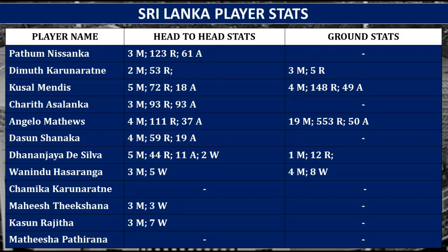Regarding Sri Lanka player stats — Pathum Nissanka averages around 61 against Afghanistan. Karunaratne has scored 53 runs in 2 matches. Kusal Mendis has an 18 batting average against Afghanistan but an excellent 49 average at this ground. Charith Asalanka has scored 93 runs in 3 matches against Afghanistan. Matthews averages 37 against Afghanistan and 50 at this ground. Dasun Shanaka averages 19 against Afghanistan. Dhananjaya de Silva has poor records against Afghanistan and scored only 12 runs in 1 match at this ground. Wanindu Hasaranga has taken 5 wickets in 3 matches against Afghanistan and 8 wickets in 4 matches at this ground. Matthews has 3 wickets. Kasun Rajitha has an excellent record against Afghanistan with 7 wickets in 3 matches.